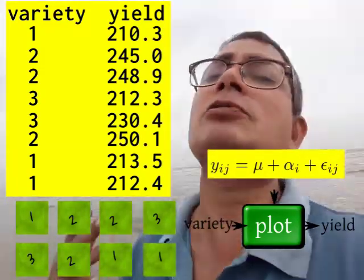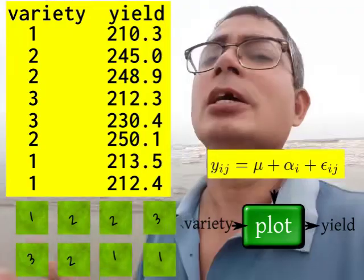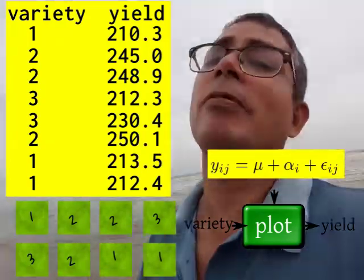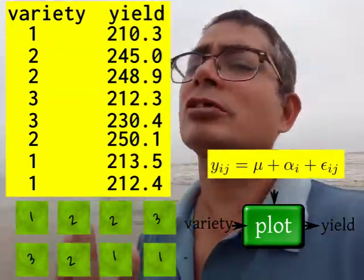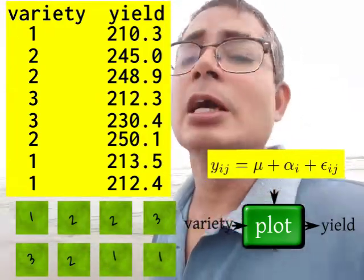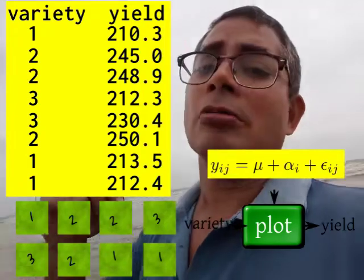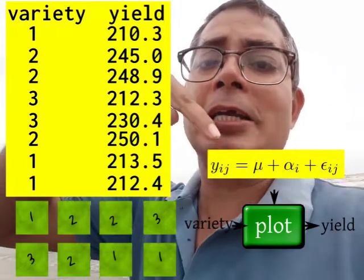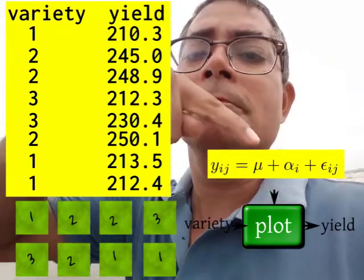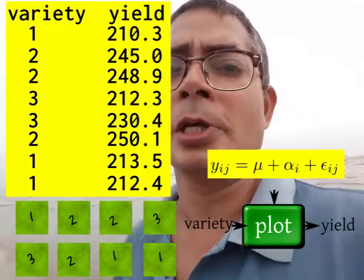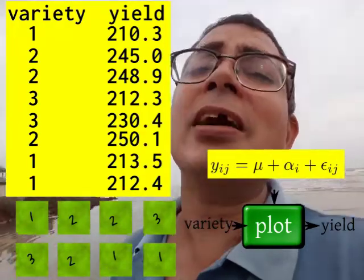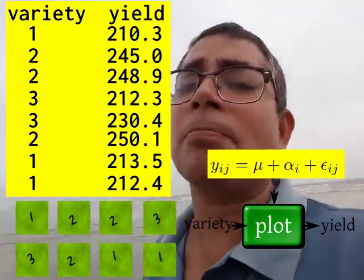However, there is one advantage of using this particular model over the last model that I showed. Though they are basically equal, the advantage is in terms of interpretability. Now, the parameter mu has the interpretation of being the average yield of crop,